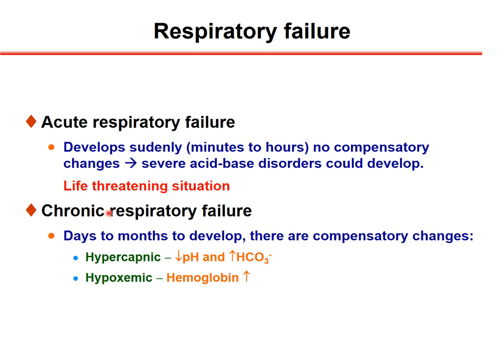When there is more time, and respiratory failure develops chronically over days to months, there are compensatory changes. For example, in hypercapnic respiratory failure, due to decreased pH, the kidney compensates by producing metabolic alkalosis, increasing buffer base and base excess. In hypoxemic respiratory failure, erythropoietin level increases, leading to an increase in red blood cells and hemoglobin concentration.